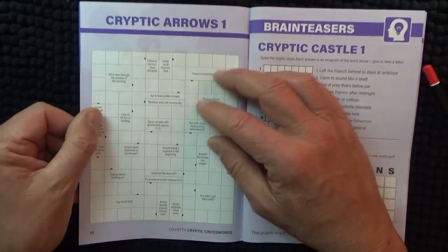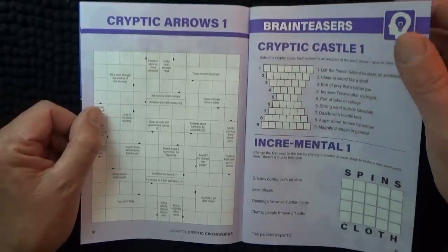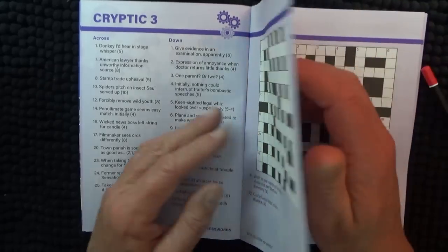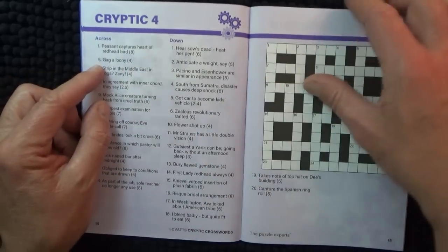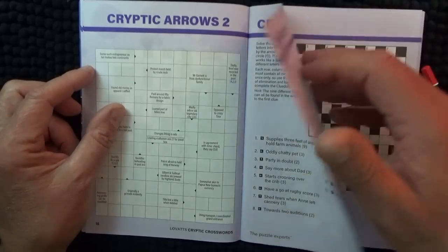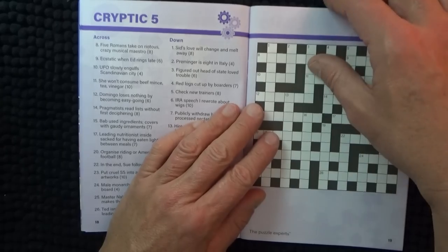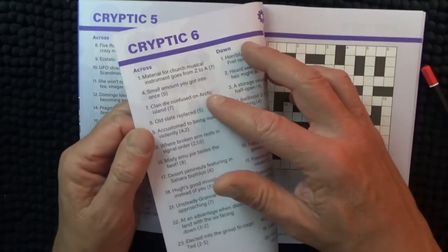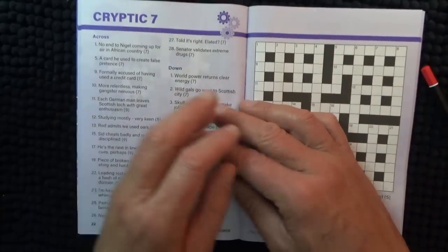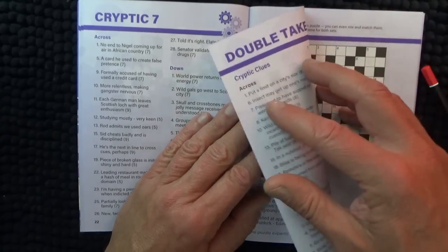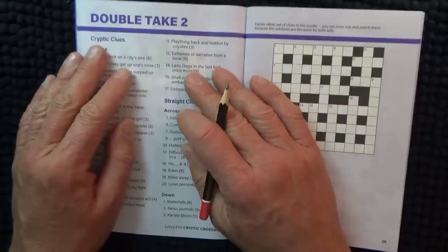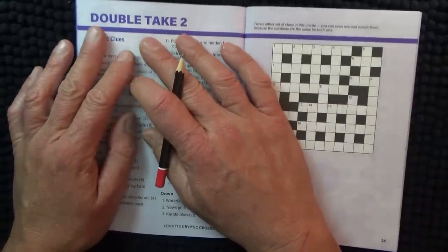So, cryptic arrows, cryptic castle, cryptic three, cryptic four, cryptic arrows, and cryptic five. I'll find it eventually. Oh gosh. I read that. Double take two, okay.